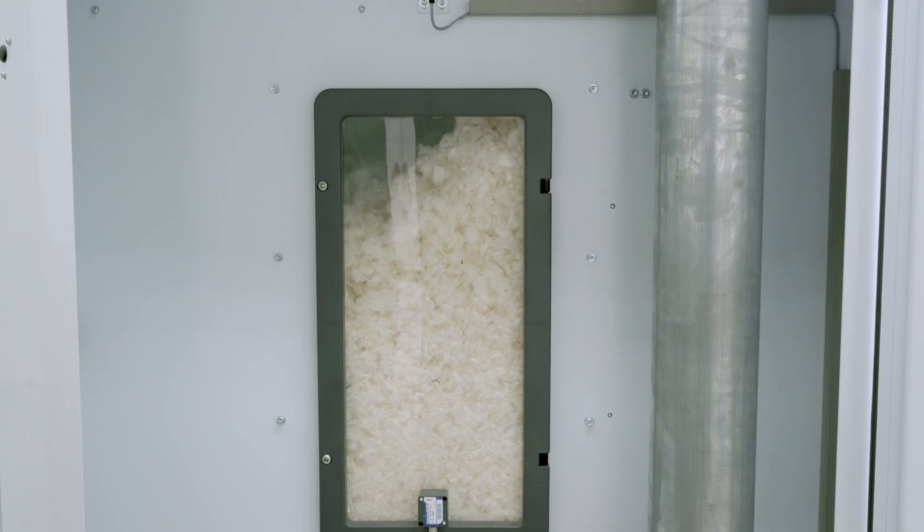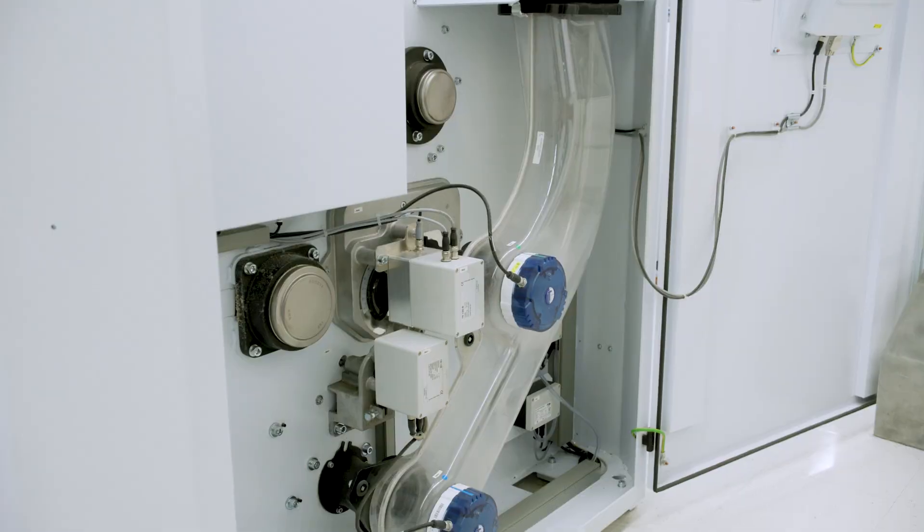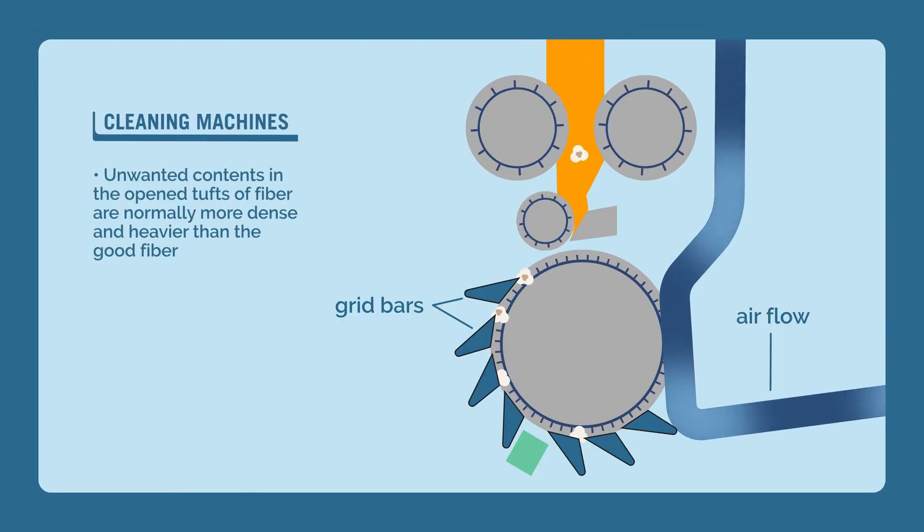Cleaning machines use a number of very basic principles in order to accomplish their goal. The trash or unwanted contents in the open tufts of fiber are normally more dense and heavier than the good fiber. These principles take advantage of this.